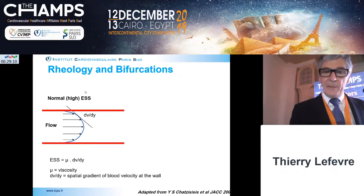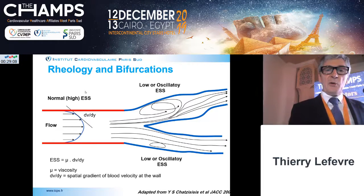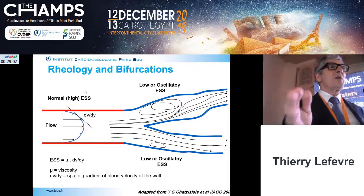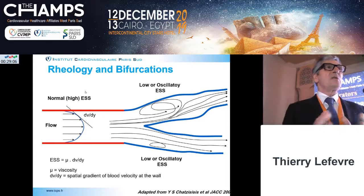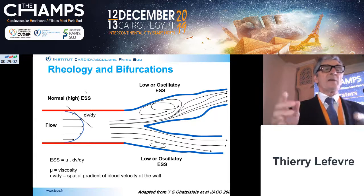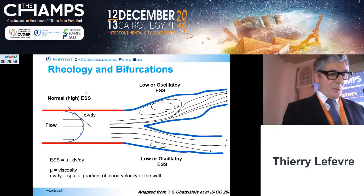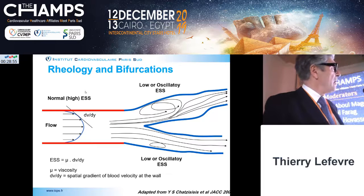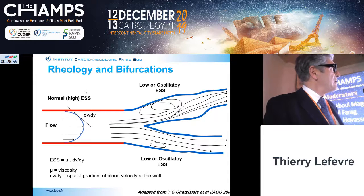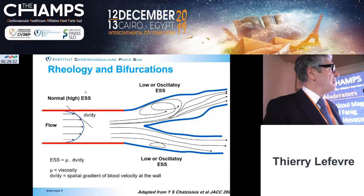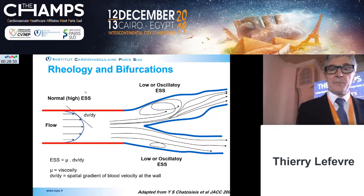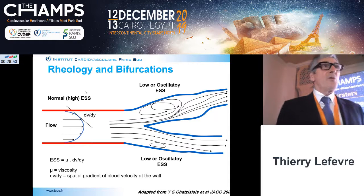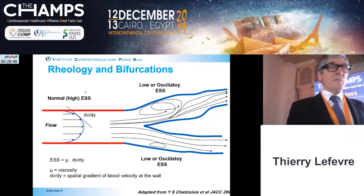Rheology is special because you have a bifurcation — a carina — which is a flow divider with areas of low shear stress opposite to the carina. This is a place where atheroma is developing, opposite to the carina. Usually there is no atheroma at the level of the carina, so no need for stents at this level.